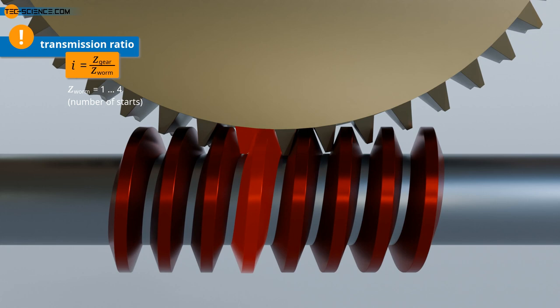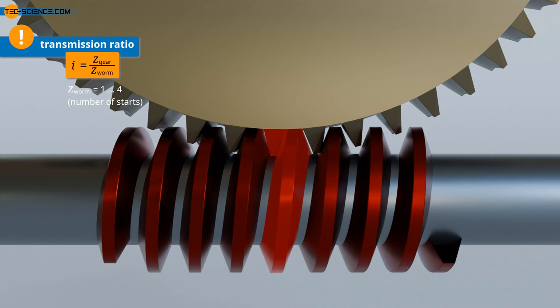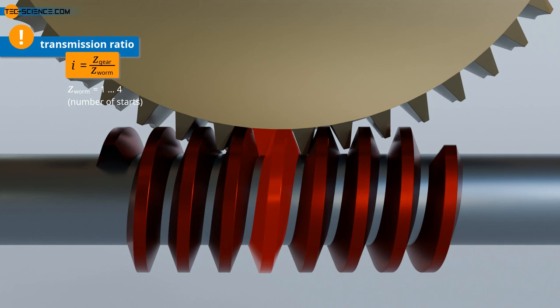For each complete revolution of the worm, the worm thread moves one position further. This means that the worm gear moves by one tooth. Compared to a conventional gear, the worm in this case actually behaves as if it had only one tooth on its circumference.